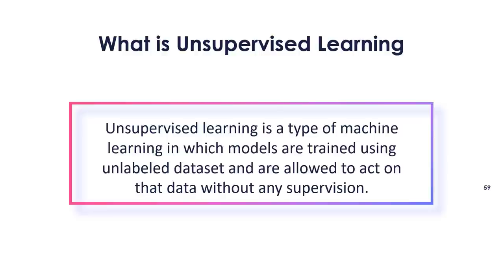For example, say a dataset of pictures of different kinds of cats and dogs is given to the unsupervised learning algorithm as input. The given dataset is never used to train the algorithm, so it doesn't know anything about the features of the dataset. The unsupervised learning algorithm's job is to figure out on its own what the image features are, dividing the image dataset into groups based on how similar the images are. Reasons to use unsupervised learning include: finding useful information in the data is easier; it is closer to the real AI since it resembles how people learn through their own experiences; it works on data that has not been labeled or grouped; and in the real world, we don't always have data about what went in and what came out.